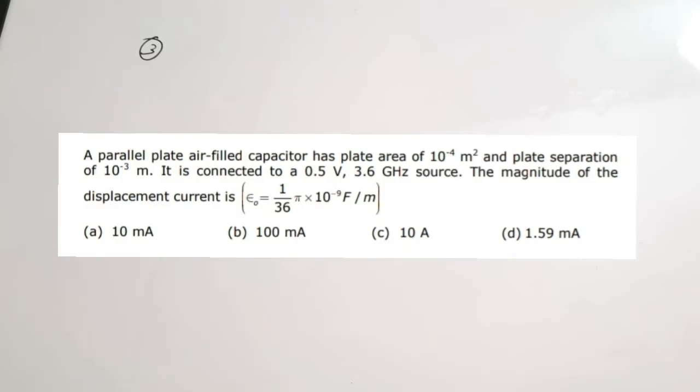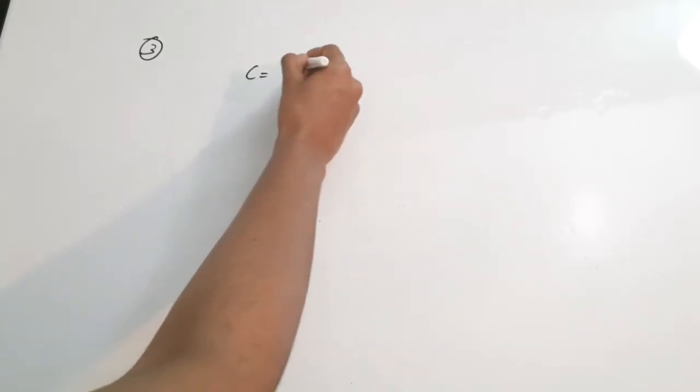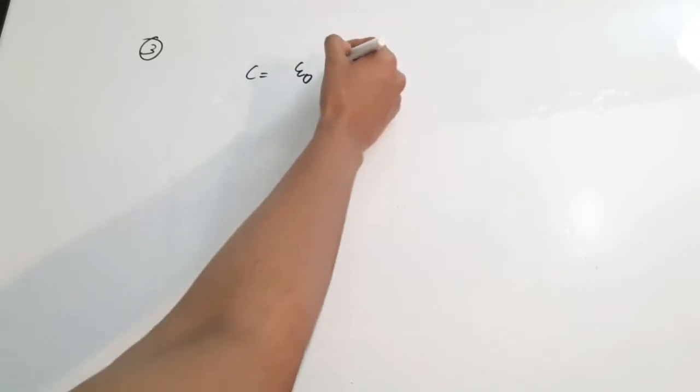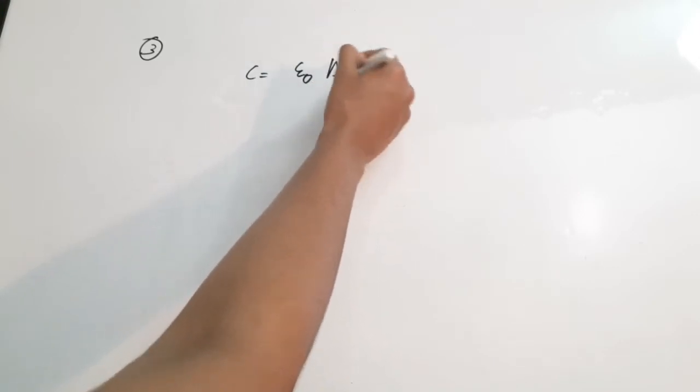The next question is regarding a capacitor. A parallel-plate air-filled capacitor has a plate area of 10⁻⁴ m² and plate separation of 10⁻³ m. It is connected to a 0.5-volt, 3.6-GHz source. We need to find the magnitude of the displacement current. To do so, we start by finding the capacitance.